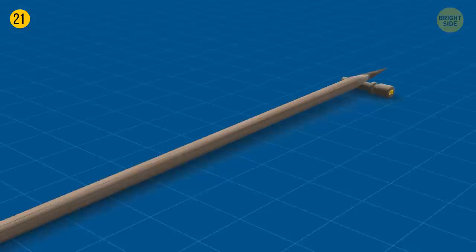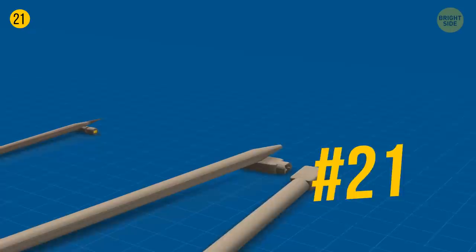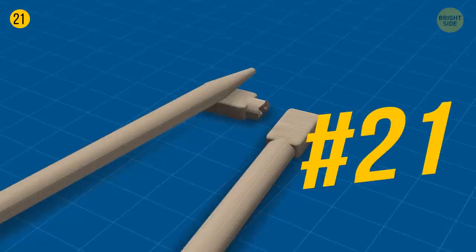You can also make a makeshift stand for disposable sushi sticks. They have a sort of lump at one side before you split the pair. Break that lump off and when you want to take a sushi break, just place the stick on this stand.